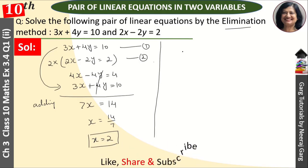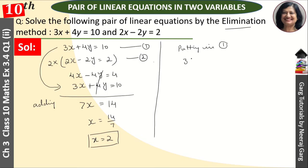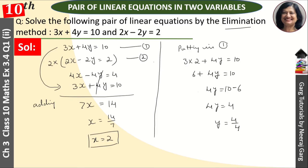Now we substitute x equals 2 into the first equation. Putting x equals 2 in equation 1: 3 times 2 plus 4y equals 10, so 6 plus 4y equals 10, therefore 4y equals 4, and y equals 1. Our two answers are x equals 2 and y equals 1.